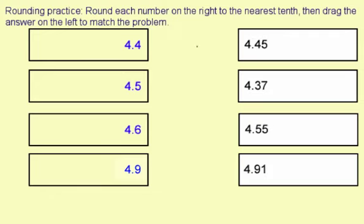So let's round these numbers on the right to the nearest tenth. Remember the rule for rounding: if the digit next to the one you're rounding to is less than 5, you round down. If it's greater than 5, you go up.